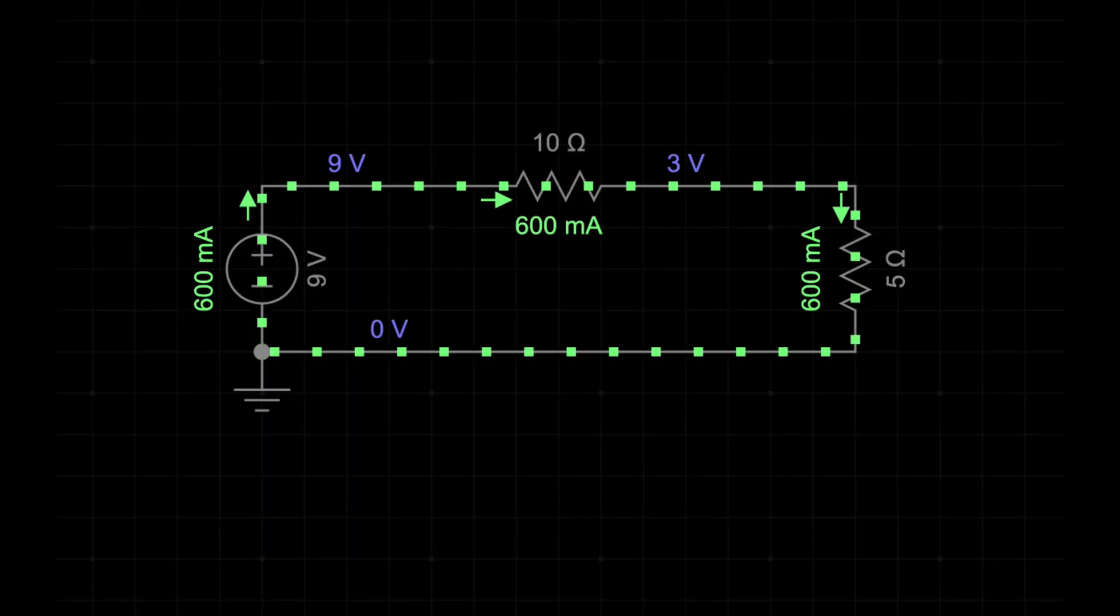We can see the voltage divider works in this circuit. The 9 volt power supply has been reduced to a voltage of 3 volts in R2.